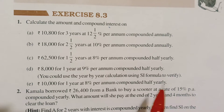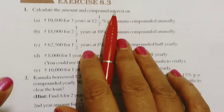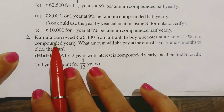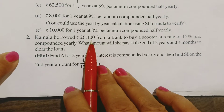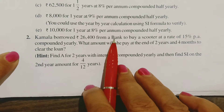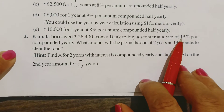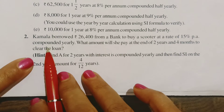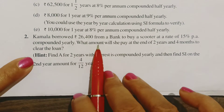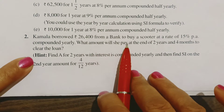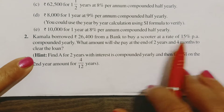Class 8, Exercise 8.3, Question No. 2. Kamala borrowed ₹26,400 from a bank to buy a scooter at the rate of 15% per annum, compounded yearly. What amount will she pay at the end of 2 years and 4 months to clear the loan?